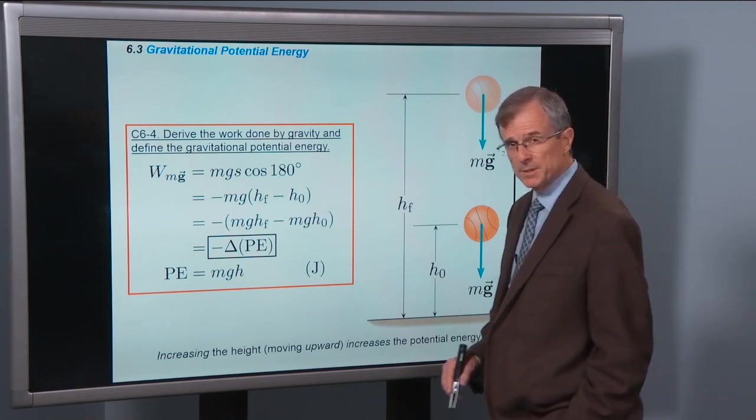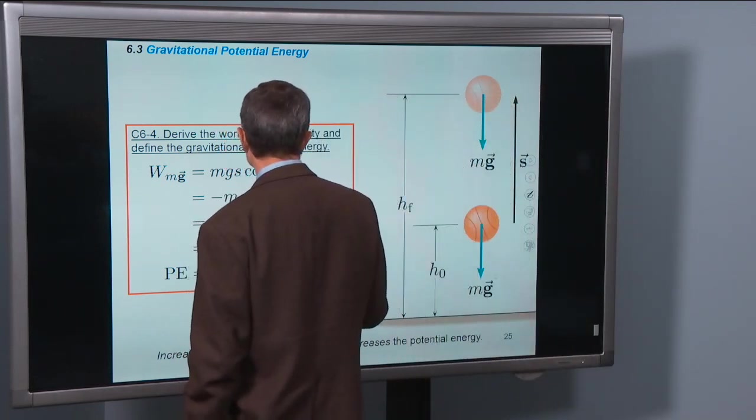Later on we'll talk about the potential energy due to springs and other sources of energy. But today, potential energy due to gravity. Derive the work done by gravity and define the gravitational potential energy.